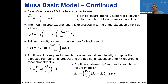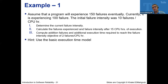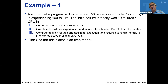Every model has these kinds of properties, but the assumptions and the mathematical model itself will be different. This Musa model is linear; the next one we'll learn — the Musa-Okamoto — is based on a Poisson distribution. Let's see how this helps us in real life, and this is going to be your take-home quiz.